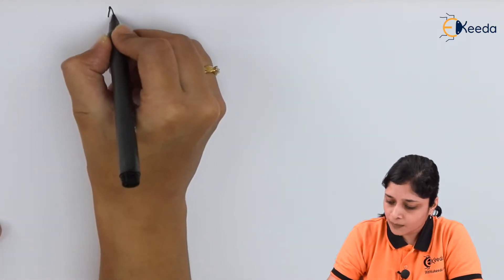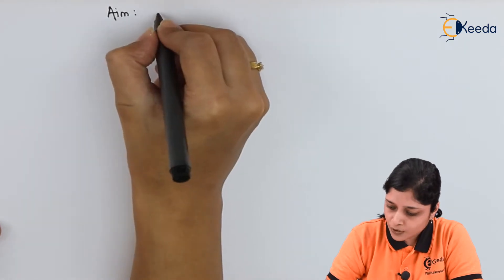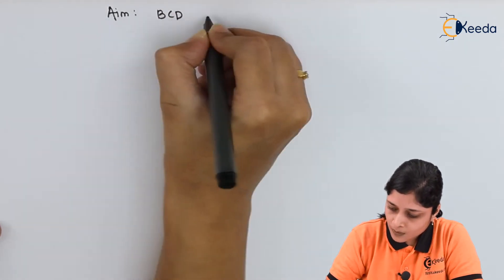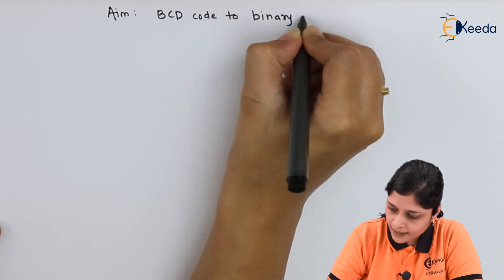Let's start with the example. Write down the aim. Don't forget to write down the aim: Conversion of BCD code to binary code.